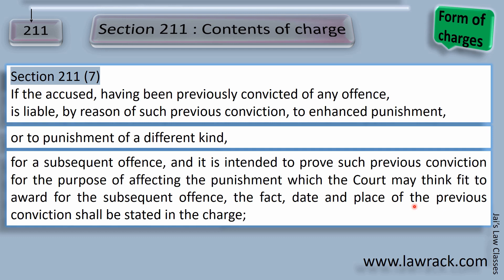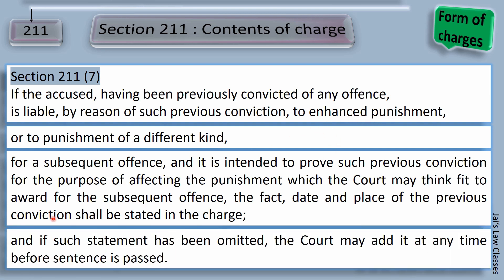Clause 7 further says that if such statement has been omitted, the court may add it at any time before sentence is passed. So for whatever reason — maybe while framing the charges we were not aware he had committed an offense in the past — the court can add that to the charge at any time before the passing of sentence. It is very obvious: if the sentence has been passed, there is no reason to add it.